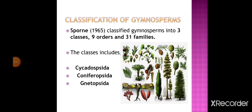Classification of gymnosperms: in 1965, gymnosperms were classified into 3 classes, 9 orders, and 31 families. The three classes are Cycadopsida, Coniferopsida, and Gnetopsida.